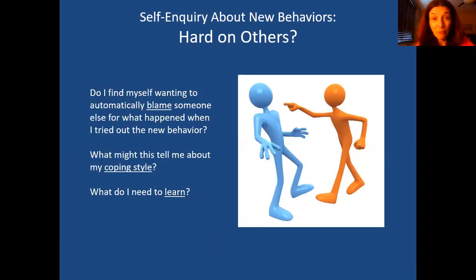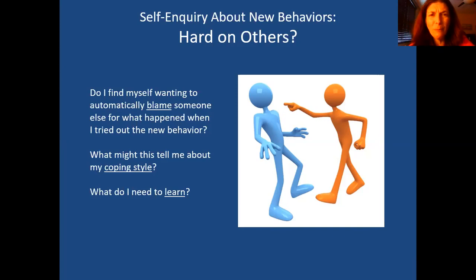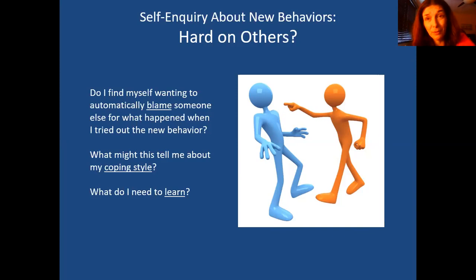On the flip side, sometimes we can feel uncomfortable based on our perception of how others responded to us. Am I being too hard on other people or maybe even misjudging them? Do I find myself wanting to automatically blame someone else — like 'you pressured me too much and that's why I screwed up'? What might this tell me about my coping style and what do I need to learn? Maybe it's revealing that I have a habit of blaming people when I'm uncomfortable.